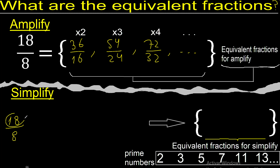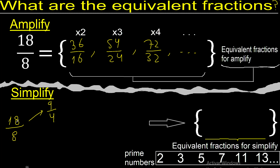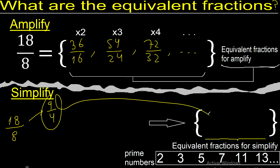Now, 18 and 8 can be divided by 2. 18 divided by 2 is 9. 8 divided by 2 is 4. 18 and 8 cannot be divided by another number. 9 and 4 cannot be divided by the same number. Therefore...